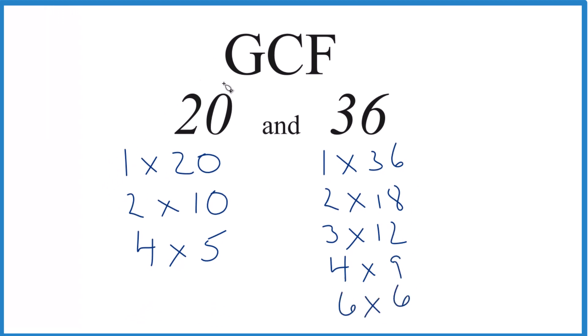Now we'll compare the factors for 20 and 36 to find the GCF. They have 1 in common, 2 goes into both 20 and 36, and 4. That's it. 4 is the greatest number that goes into both 20 and 36.